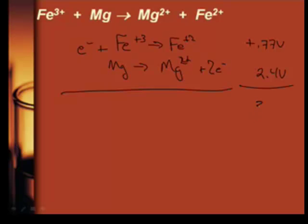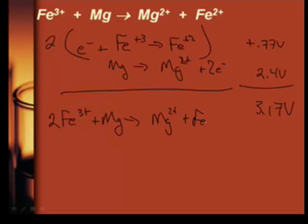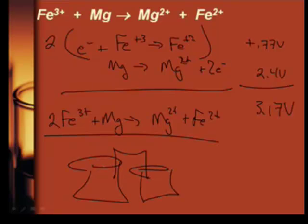And so the total voltage would be 3.317. 3.2. And the overall reaction, you would have to double this. Yep. And it would be 2 Fe, but that still doesn't change the voltage, plus the magnesium makes the magnesium 2 positive plus the Fe 2 positive. So if you were to separate these in a cell, put a salt bridge between them, and put a voltmeter between them, you would have a voltmeter that would read 3 volts.